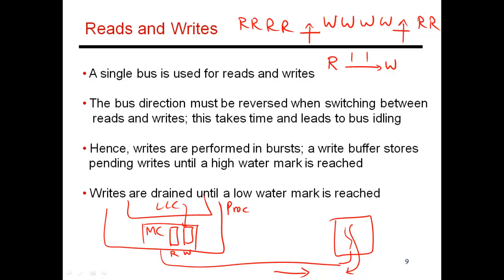Since writes are not on the critical path, reads are always prioritized. When a write shows up, it gets buffered in the write queue. Once the write queue gets close to being full—this is called a high water mark—you realize it's time to start draining the writes. Otherwise your write queue will get full. At that point, you turn the bus around and start draining these writes.